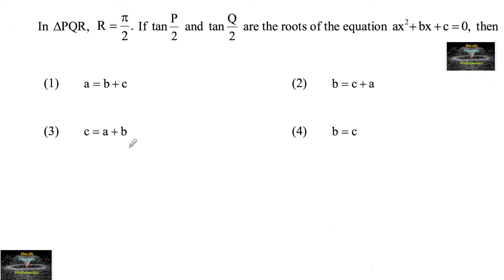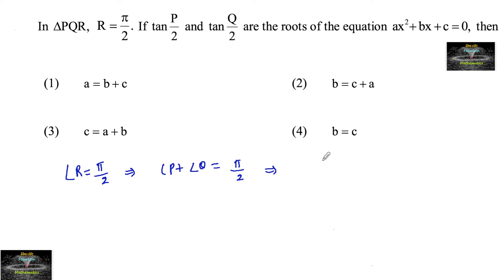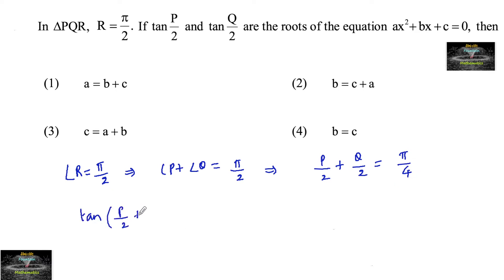In triangle PQR, if angle R is equal to 90 degrees — angle R is π/2 — this implies angle P plus angle Q is equal to π/2, which implies angle P/2 plus angle Q/2 is equal to π/4. Applying tan on both sides: tan(P/2 + Q/2) is equal to tan(π/4).